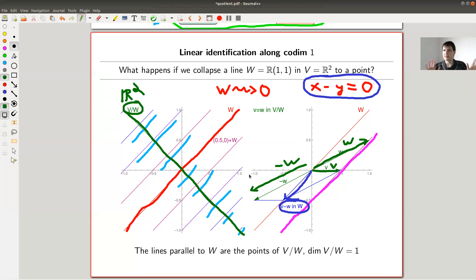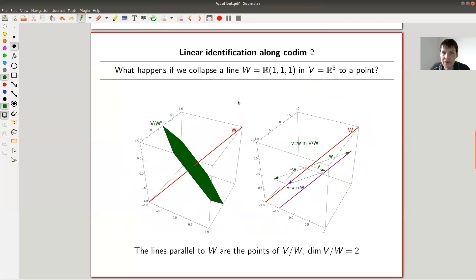So all I have done on the slide is I've identified W to a point. And I look at what happens if my notion, my proposed notion of being equal is if things differ by W. And it turns out that I get a new space whose points, and that's maybe a bit confusing, but the points of the new space are the lines parallel to them. Okay, and this is really how it works.